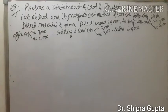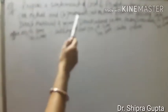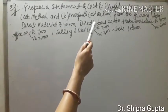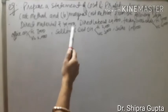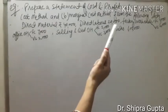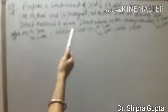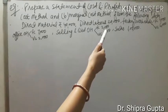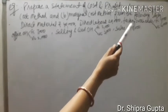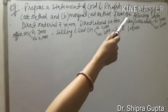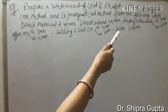Now we will understand this by the help of an example. Prepare a statement of cost and profit under — number one, absorption cost method, and number two, marginal cost method — from the following data. Direct material: Rs. 40,000. Direct labor: Rs. 20,000. Factory overheads divided into fixed cost Rs. 4,000 and variable cost Rs. 6,000.